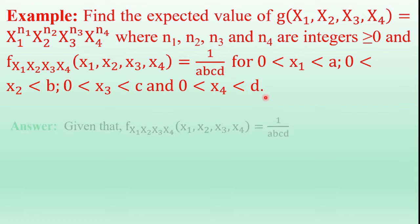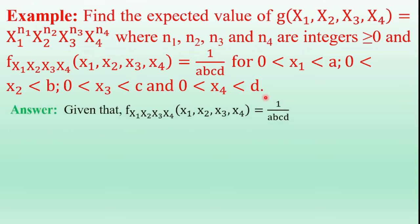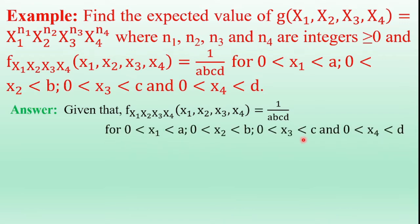Coming to the solution: given that the joint density function of random variables x1, x2, x3, and x4 is 1/(abcd), for x1 from 0 to a, x2 from 0 to b, x3 from 0 to c, and x4 from 0 to d.